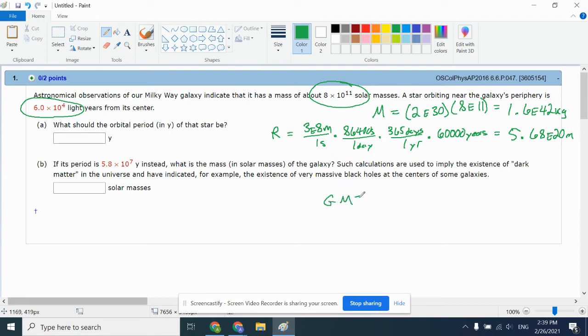Now it becomes a pretty nasty plug and chug. I say nasty because of all the scientific notation you're going to have to deal with. Your ultimate goal is to find T. Put 6.67E-11 in for G, the mass is 1.6E42, don't forget T squared, 4 pi squared, then R is 5.68E20. Make sure you cube R. I'll start with that 5.68E20, cube it, multiply by 4 pi squared, then divide out 6.67E-11, then divide out 1.6E42. Finally taking the square root, I get a period of 8.23E15 seconds.